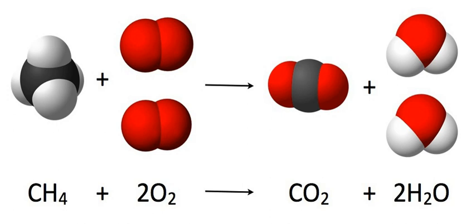An ionic equation is a chemical equation in which electrolytes are written as dissociated ions. Ionic equations are used for single and double displacement reactions that occur in aqueous solutions. For example, in the following precipitation reaction: calcium chloride plus 2 AgNO3 yields calcium nitrate plus 2 silver chloride.